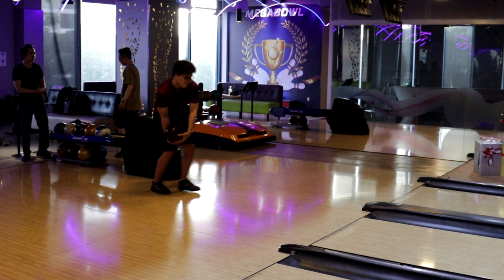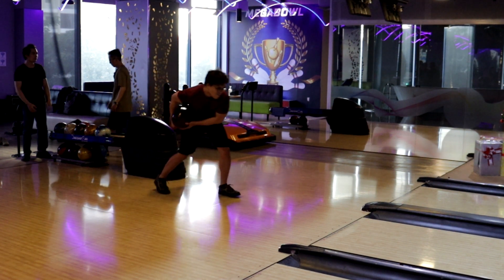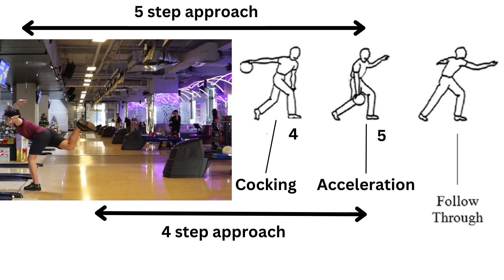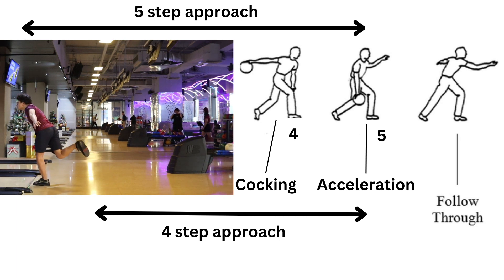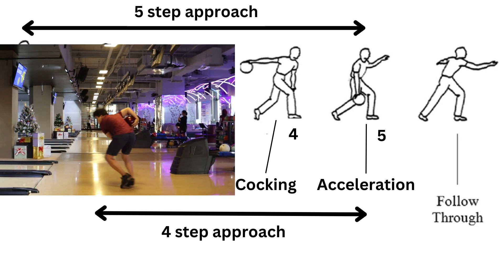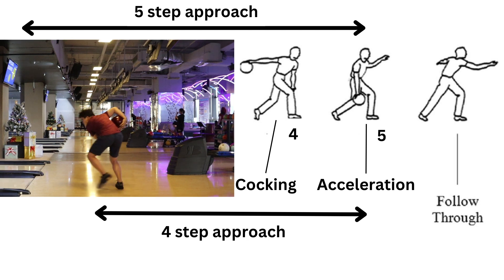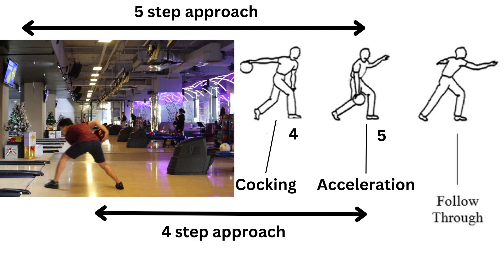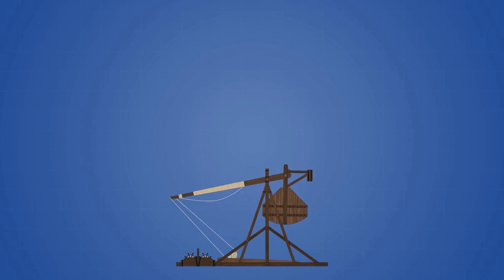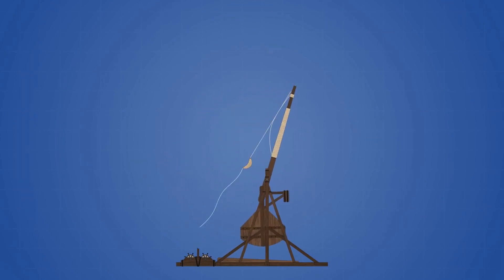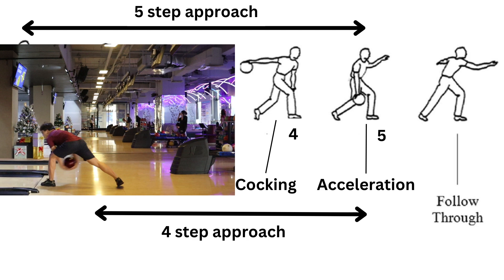Everyone has their unique style; there's no single pattern for all. The cocking phase covers steps 4 and 5 with the 5-step approach, or steps 3 and 4 with the 4-step approach. At step 4, the bowling ball is at its highest position during the arm swing. Like a baseball pitcher at the cocking phase, you have accumulated lots of kinetic energy and are ready to discharge it to the lane. Imagine a big rock on a catapult ready to be fired — you are the catapult and the bowling ball is the rock. The last sliding step before the stop is like the long stride in baseball before the throw.